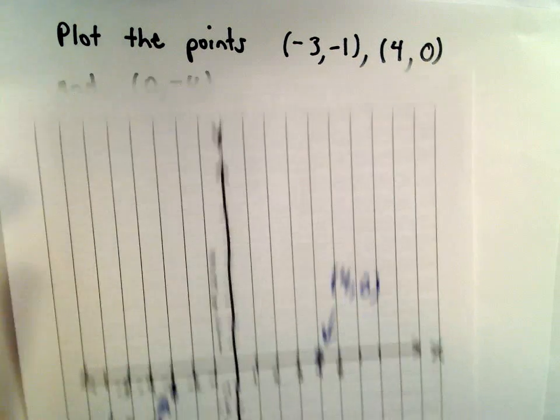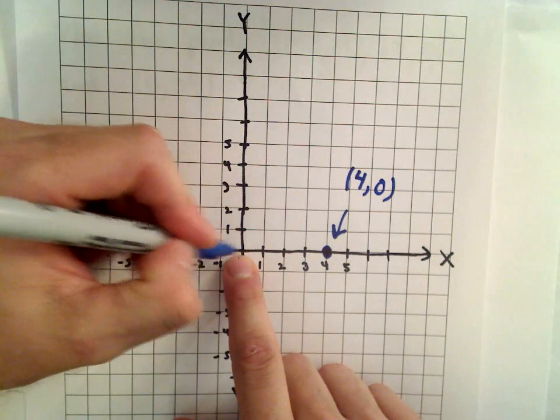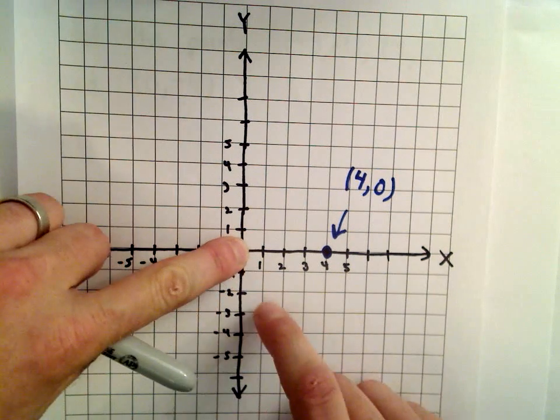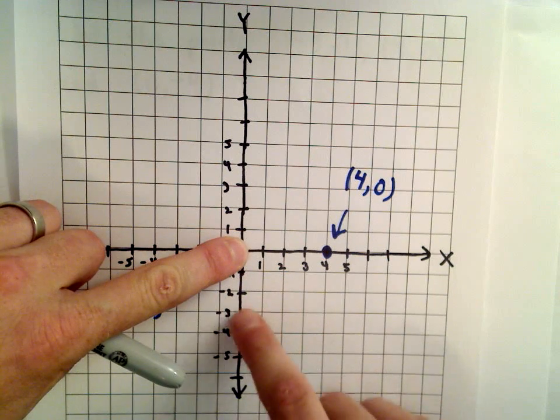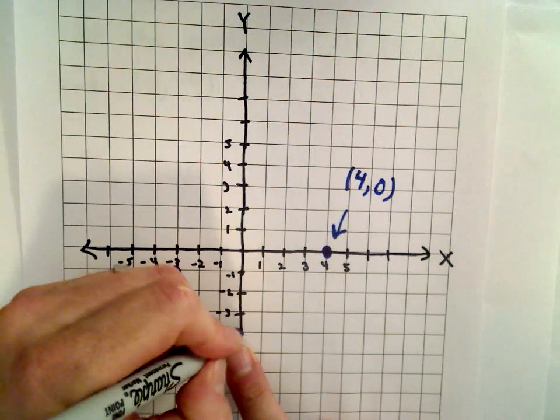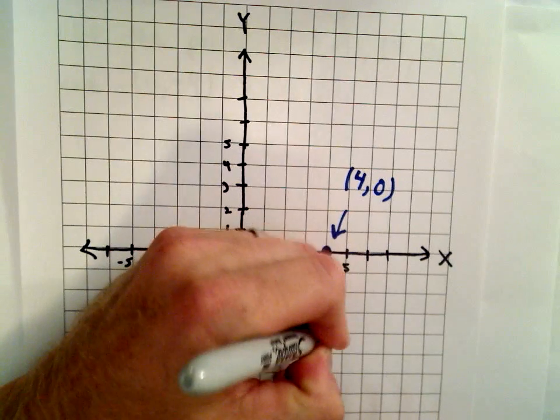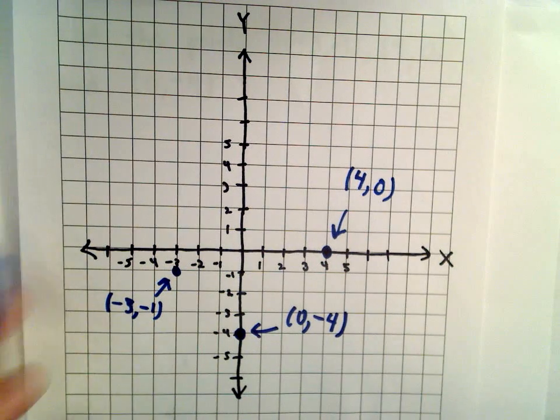Last but not least, we have 0 comma negative 4. I'll move 0 units away from the origin horizontally, then go down one, two, three, four units. There's the point 0 comma negative 4. That's going to be sitting on the y-axis.